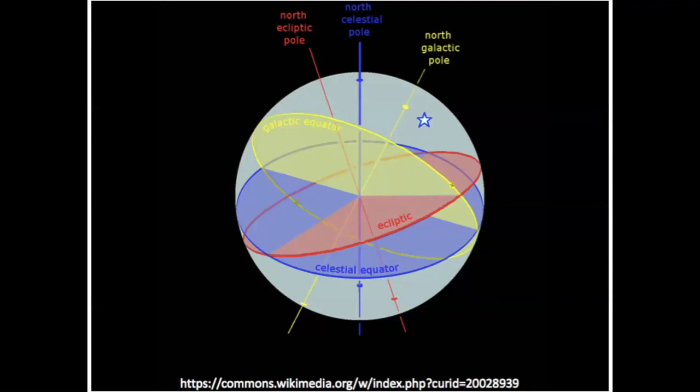The plane of the galaxy is seen in the sky as the Milky Way. As you can see then in this figure, you have the projection of the circles in the sky, the celestial equator in blue, the ecliptic in red, and the galactic equator in yellow. It defines a great circle in the sky, also with its associated poles, the north galactic pole and the south galactic pole.